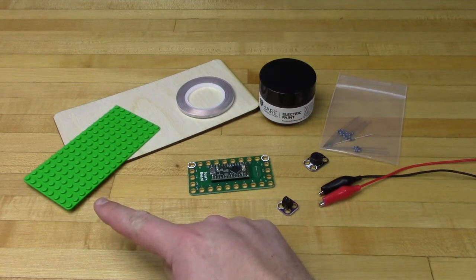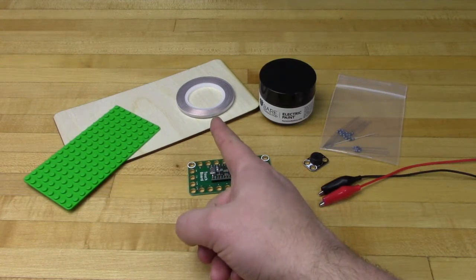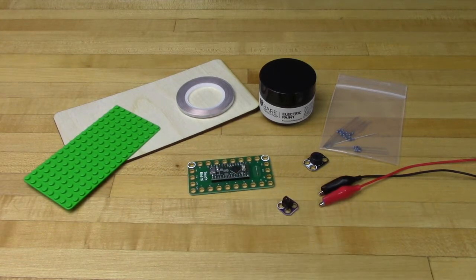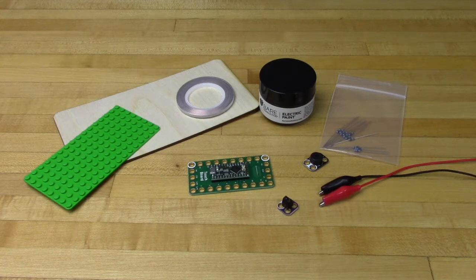A Lego base plate to put our crazy circuits parts onto, some conductive nylon tape to hook everything together, and we're going to use some laser cut wood we had around just to put everything together on, although a piece of cardboard or paper would also work just fine.